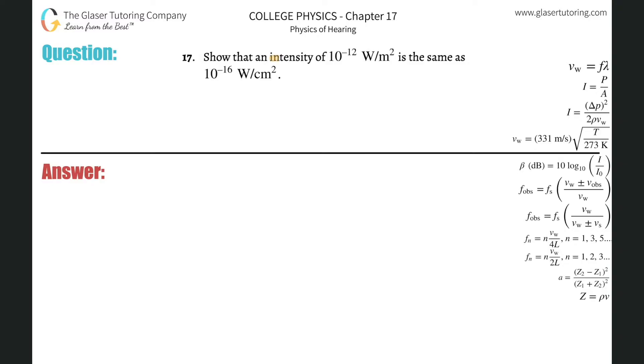Number 17: Show that an intensity of 10 to the minus 12 watts per meter squared is the same as 10 to the minus 16 watts per centimeter squared. So basically this is just a simple conversion, right? We're going to take it...